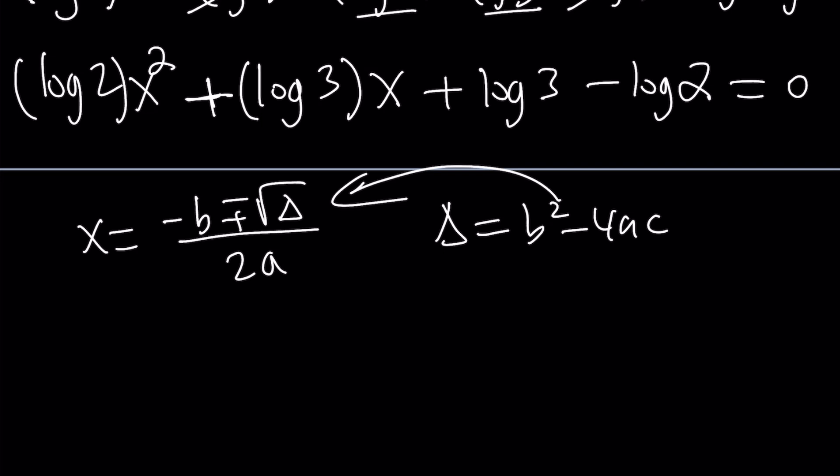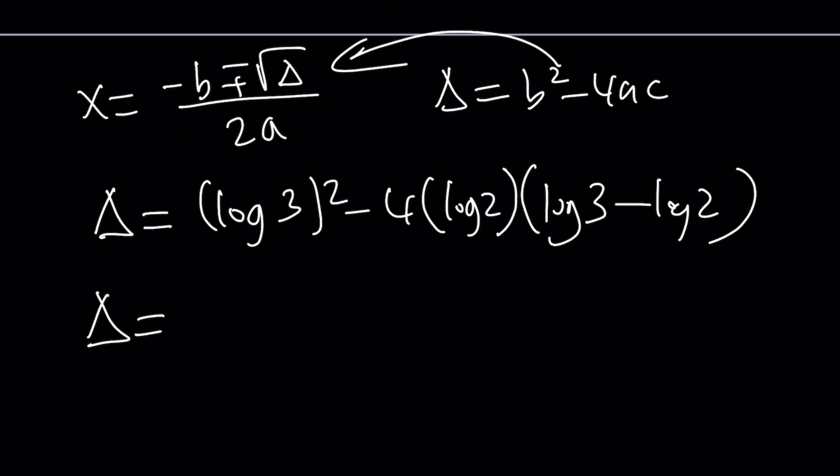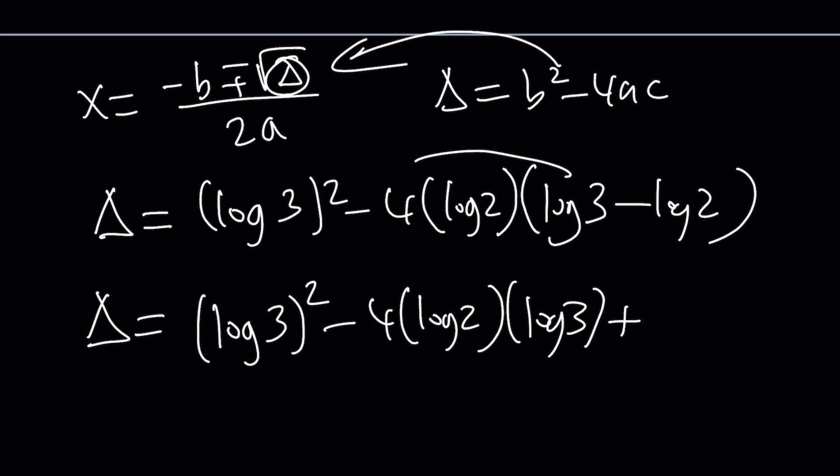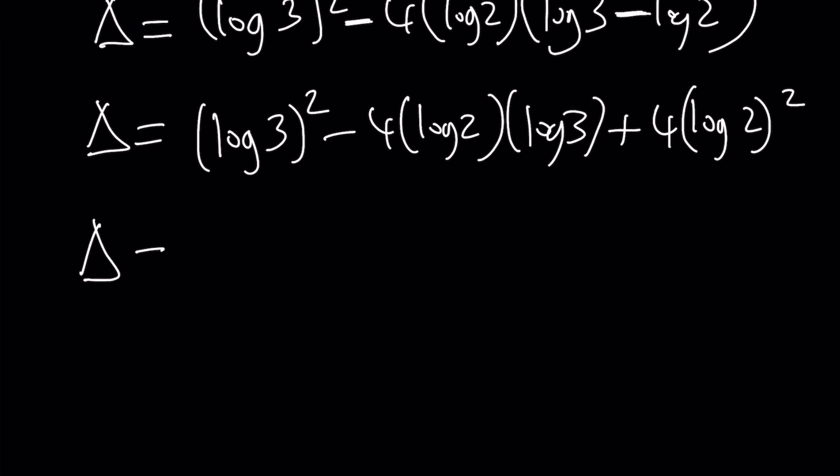Now, here's what we're going to do next. We're going to find the discriminant. What is delta? b squared log 3 squared minus 4 times log 2 times c, which is log 3 minus log 2. So log 3 squared, nothing we can do about it, but we can distribute this. Minus 4 log 2 times log 3 plus 4 log 2 times log 2 is 4 times log 2 squared. Notice that negative times negative again is going to produce a positive term. Now, this is nice if you look at it very carefully.